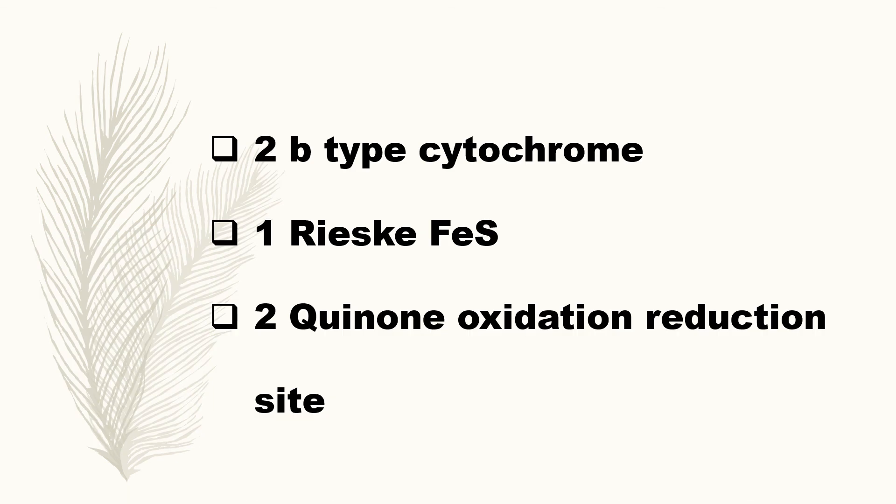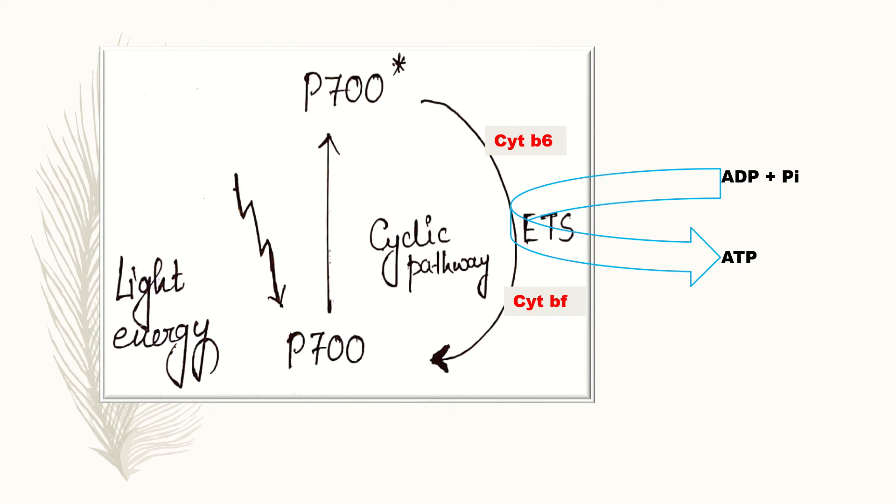In cyclic electron transfer, the second electron travels through the two B-type cytochrome and reduces semiquinone to plastohydroquinone. Cyclic electron flow is coupled to proton coupling into the lumen which is used in ATP synthesis. But here water is not oxidized to reduce NADP.